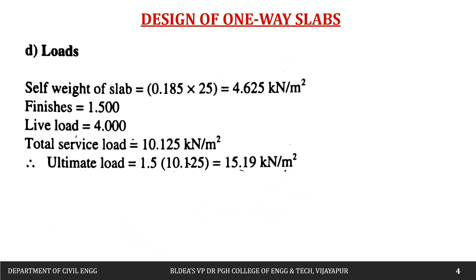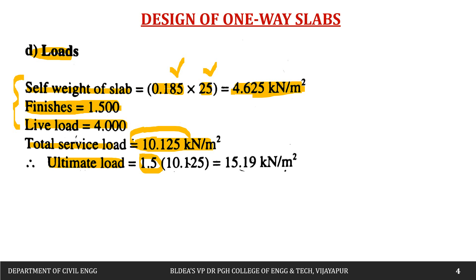Now calculating loads: self-weight of slab = overall depth × density of concrete = 0.185 × 25 = 4.625 kN/m². Floor finish = 1.5 kN/m² (assumed). Live load = 4 kN/m². Total service load = 10.125 kN/m². Ultimate load = 1.5 × 10.125 = 15.19 kN/m².